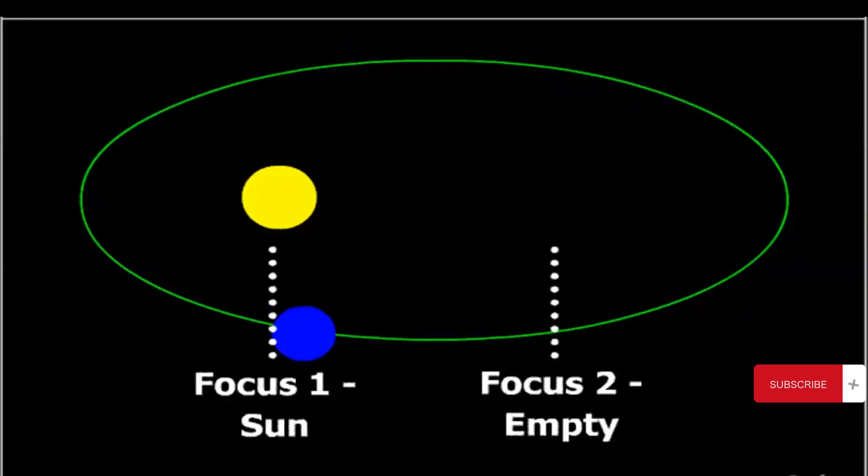Kepler's first law states that each planet in our solar system moves in an elliptical orbit around the sun, with the sun located at one of the two foci of the ellipse. In other words, the orbit of the planet is not a perfect circle, but rather an elongated and oval-shaped ellipse.